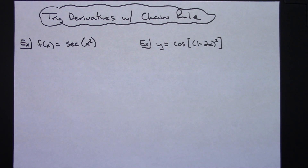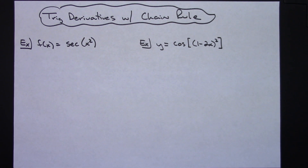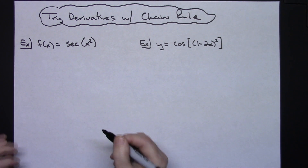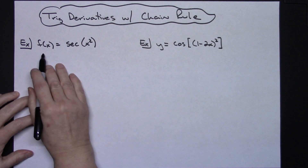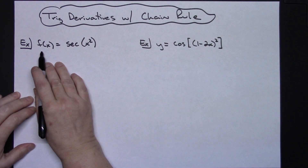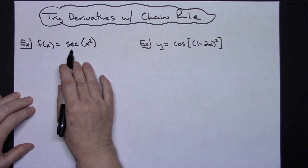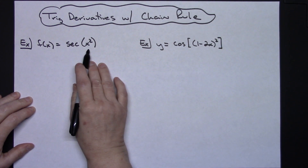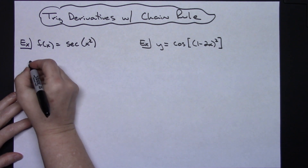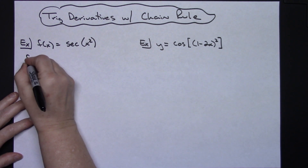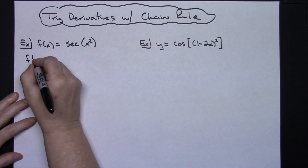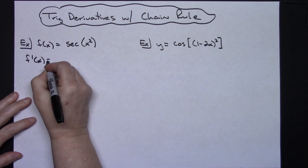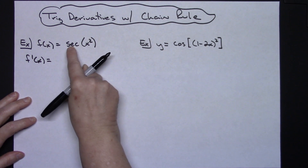In this video I'm going to work out two trig derivatives, both of which involve the chain rule. On this first example, f(x) is equal to secant x squared. I'm going to do f prime of x to show I'm taking the derivative.